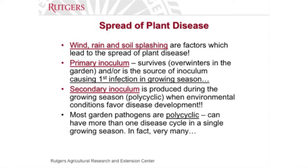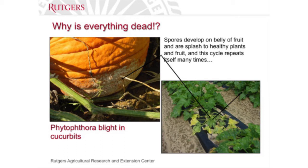This is Phytophthora on pumpkin. All that white you see on the bottom sides of the leaves — those are all spores, too many to count. The next time it rains, the spores get splashed and kill the plant next to it. You get another rain, more spores get splashed, it kills the plant in the next row, and it just works its way through your garden.